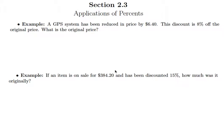In this lesson we're going to look at a few more examples that involve discounts. First one here says a GPS system has been reduced in price by $6.40. This discount is 8% off the original price. What is the original price?